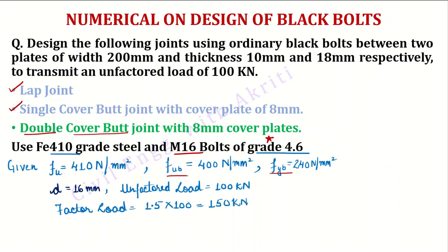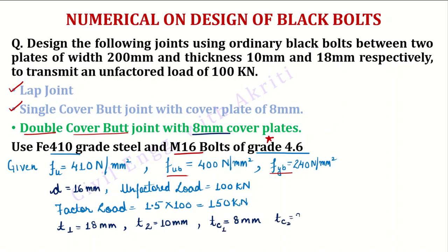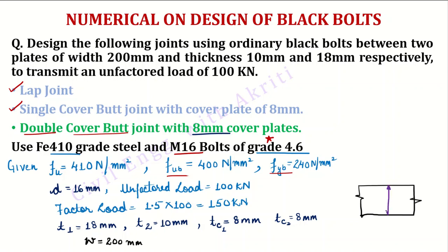The thicknesses are: T1 (main plate) is 18 mm, T2 (other plate) is 10 mm, and the thickness of the cover plate is equal to 8 mm. We will use two cover plates, each of 8 mm thickness. The width of the plate is equal to 200 mm.